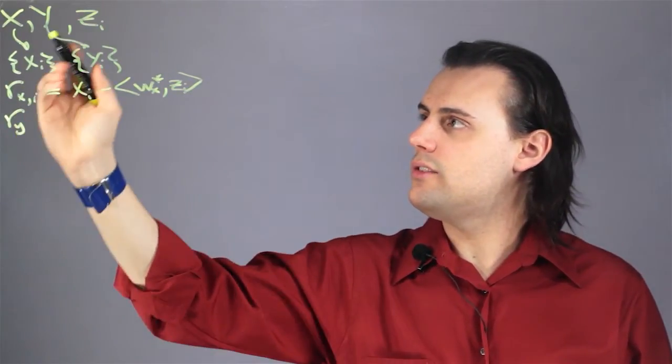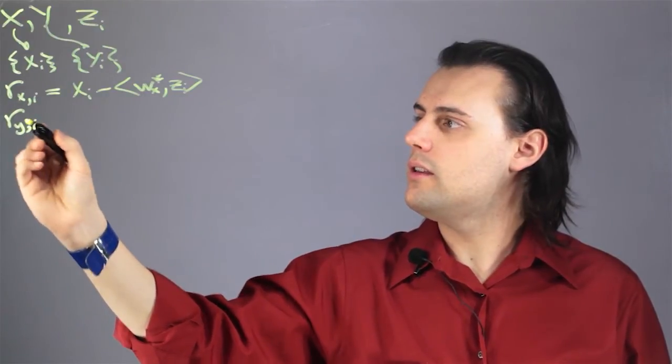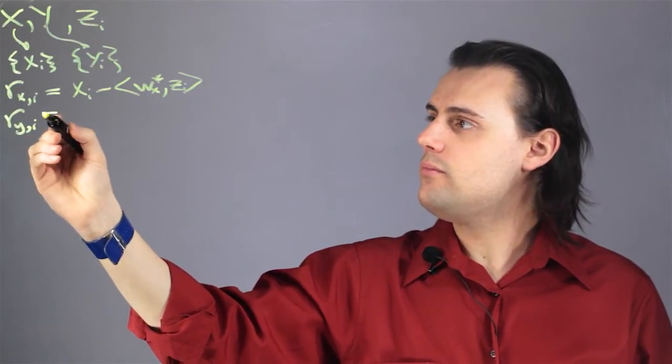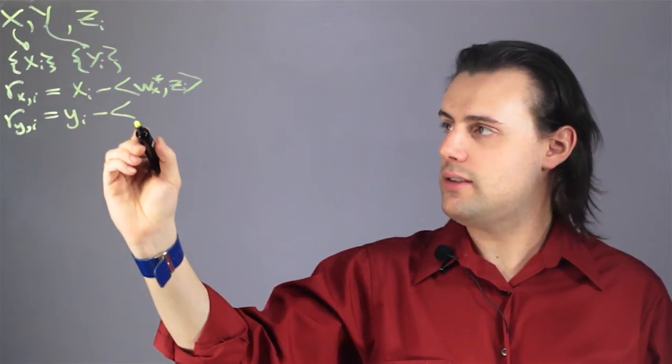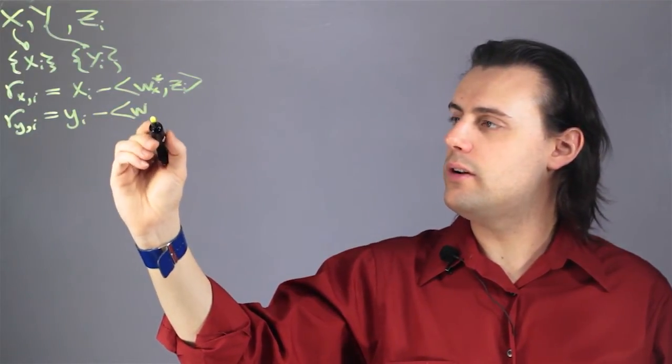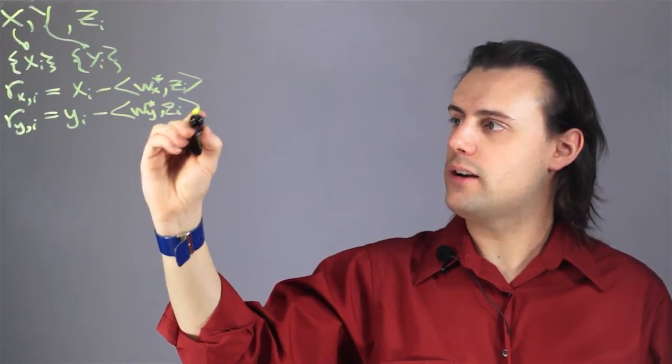the residual for the second random variable, r sub y, the i-th component, will be equal to yi minus the inner product of the corresponding solution vector for y and the distribution vector.